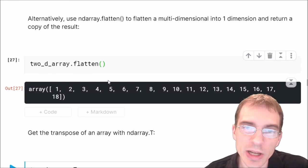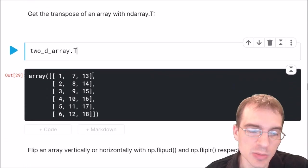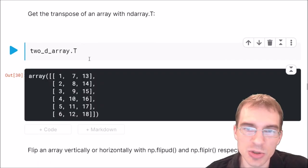To get the transpose of a 2D numpy array, you use the dot t method. What that does is essentially turn the rows into columns and the columns into rows.